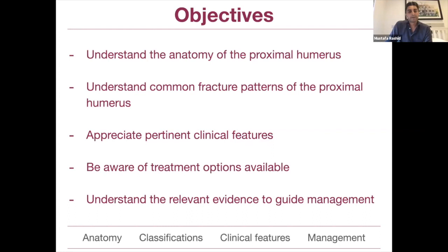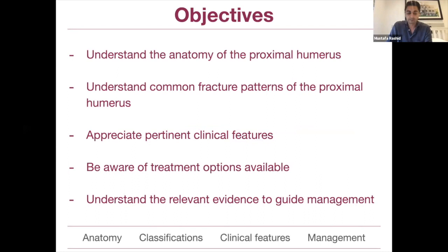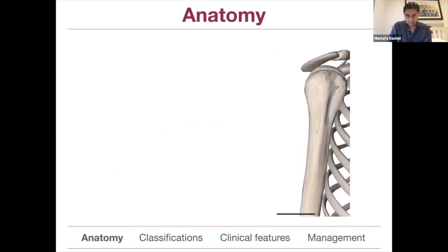The objectives of the first half are to cover anatomy of the proximal humerus, fracture patterns and classifications, clinical features when seeing a patient with a proximal humerus fracture in A&E or fracture clinic, treatment options, and relevant evidence that helps guide what we do.